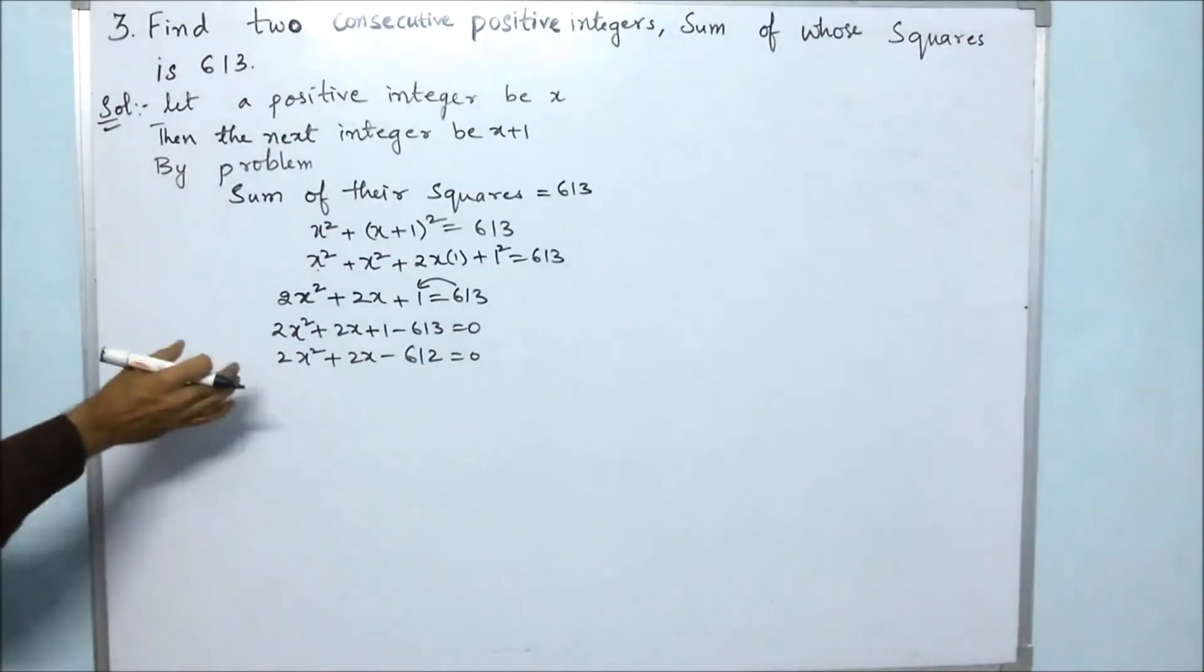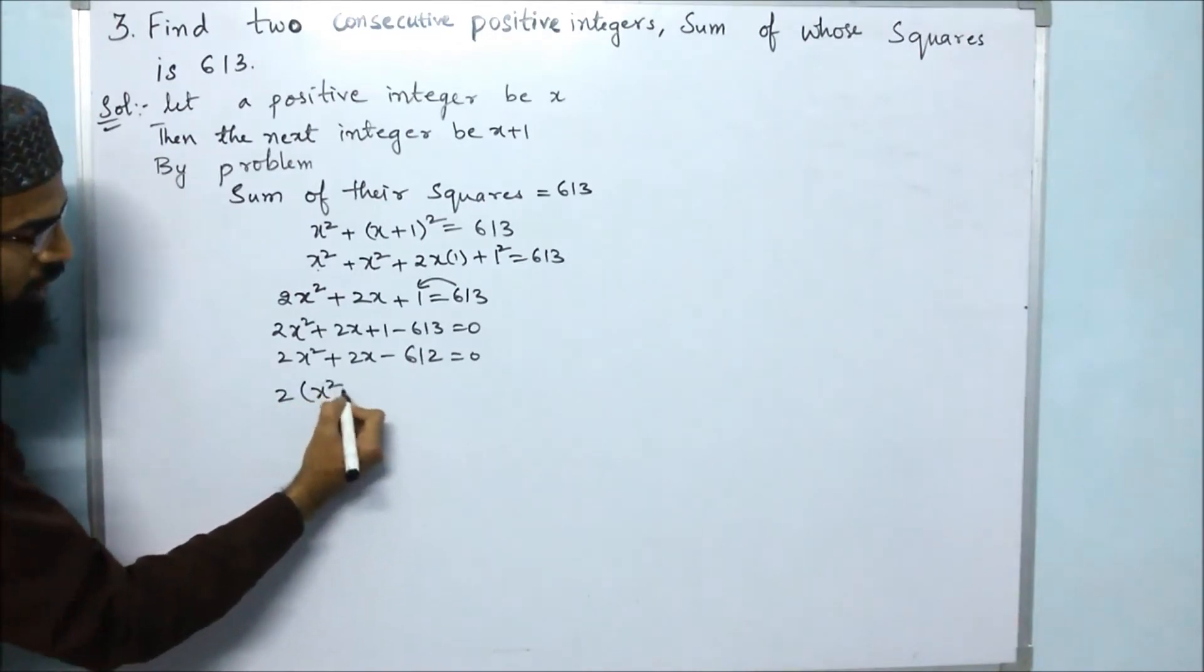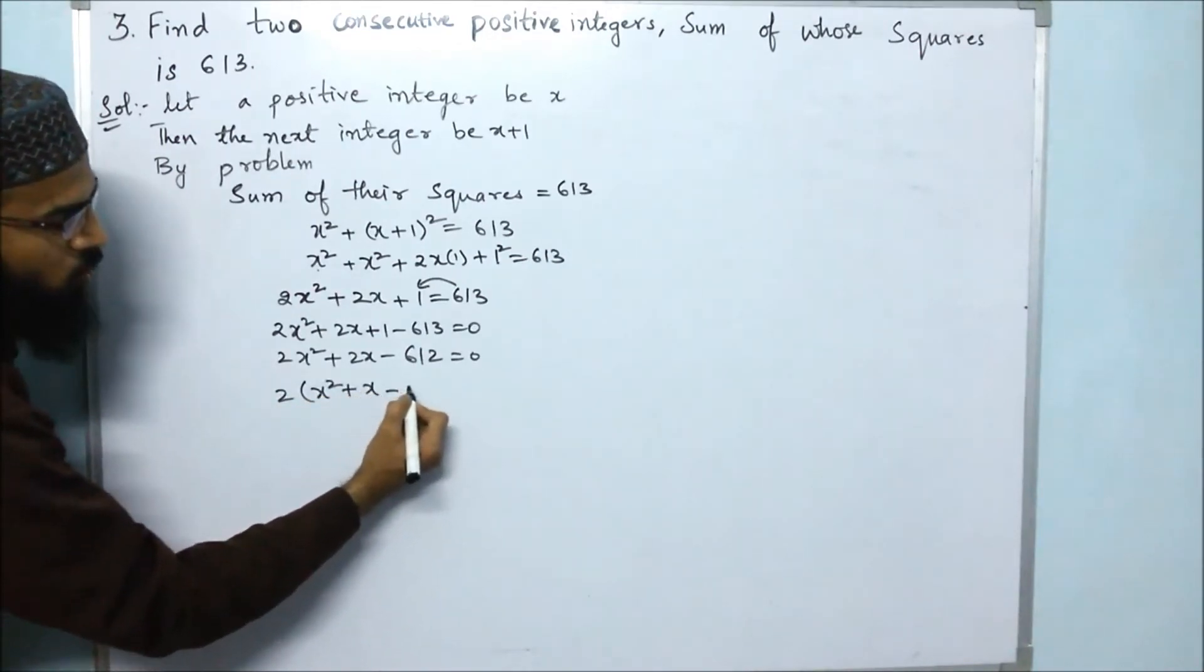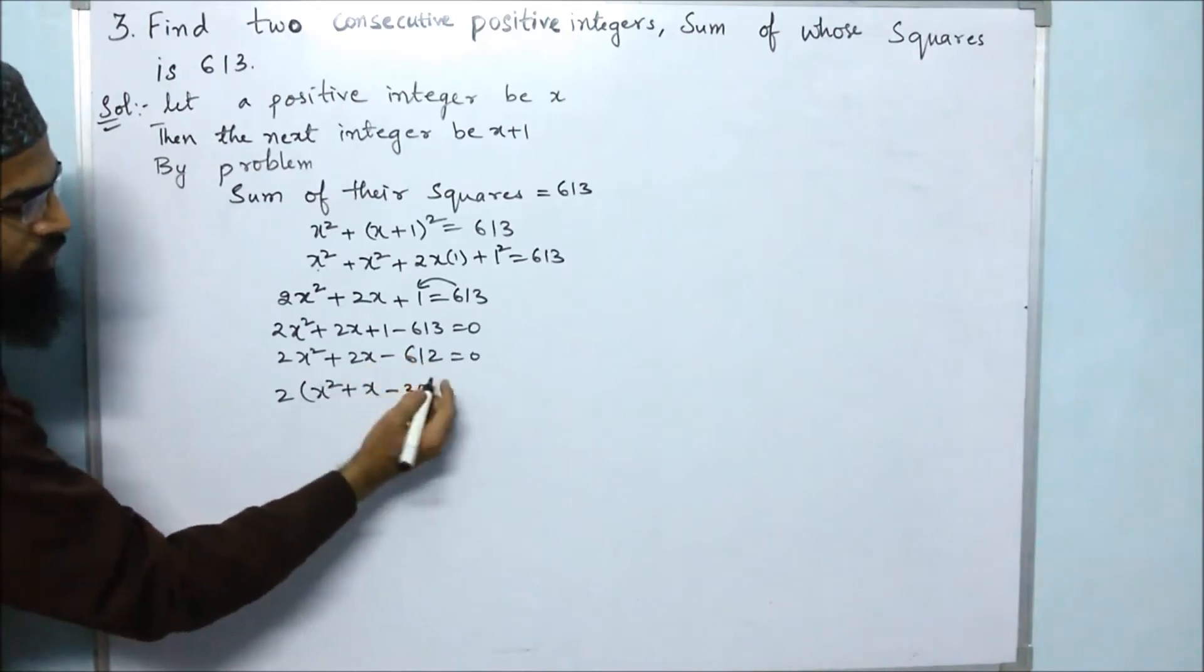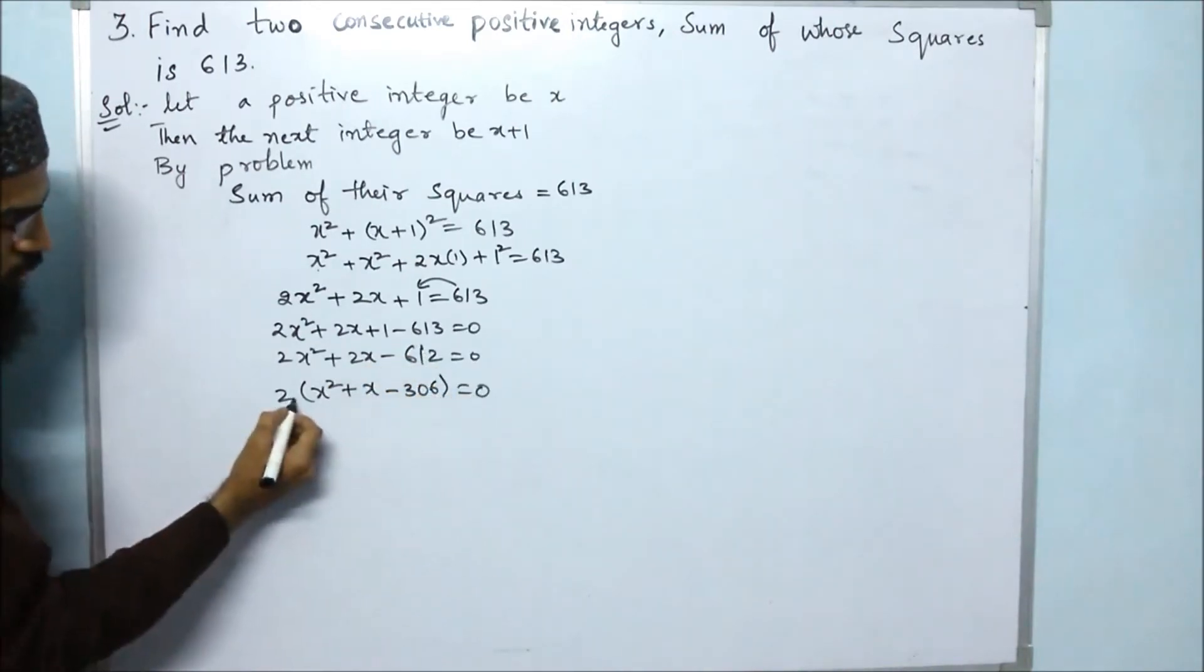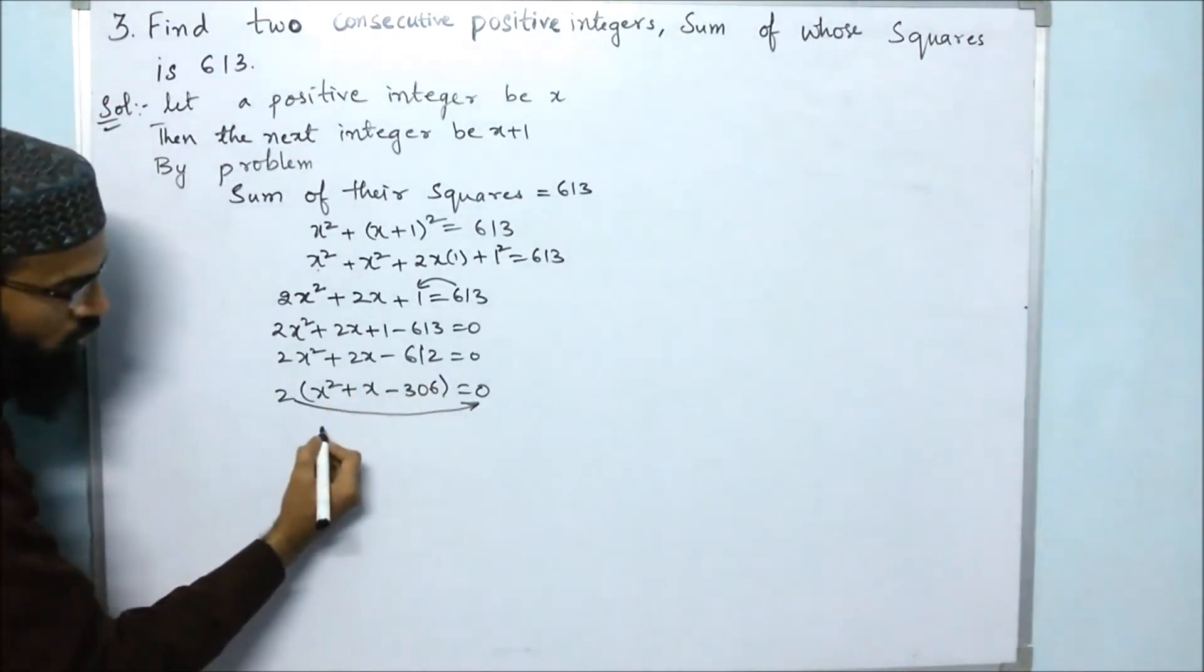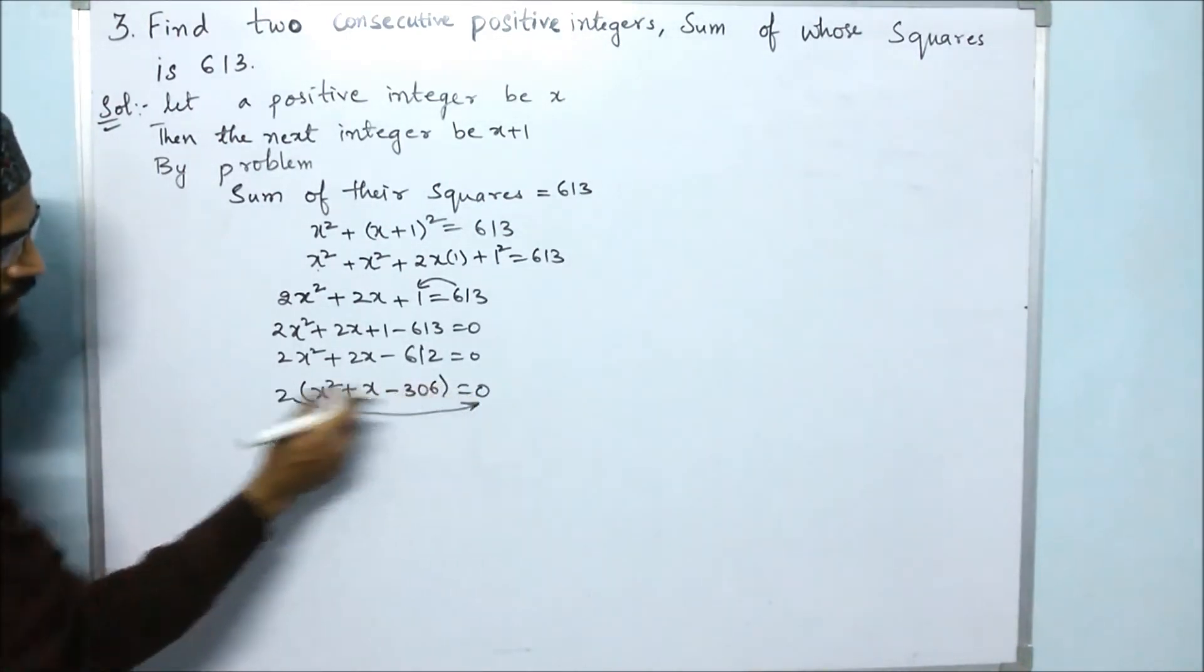Then next we can take out 2 common. So 2 is getting common. 2(x² + x - 306) = 0. 2 goes in the denominator of 0, so it will be 0. 0 by anything is 0.